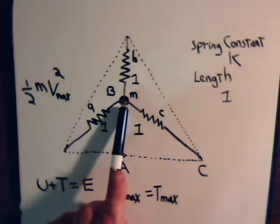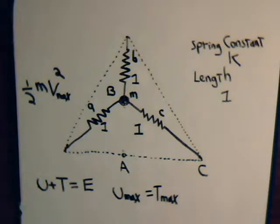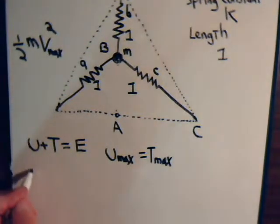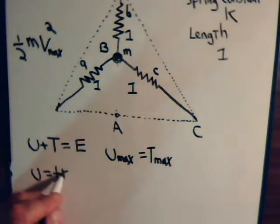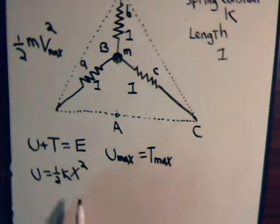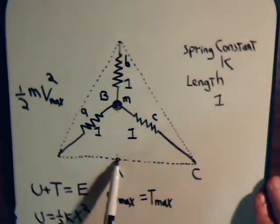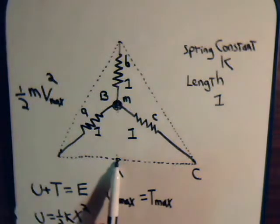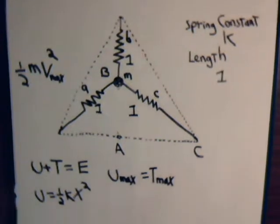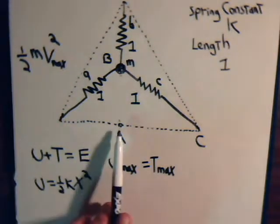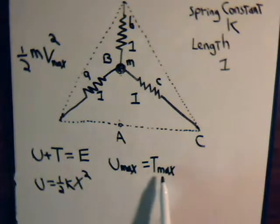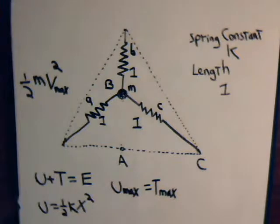Now we need to determine that maximum velocity. The potential energy in general is one-half the spring constant times the displacement squared, as shown in video six. If we can determine the lengths of the springs when the mass is displaced to point A, we know the displacement for each spring, and we can compute the maximum potential energy — and therefore the maximum kinetic energy and the maximum velocity.